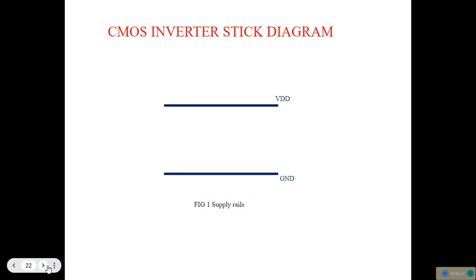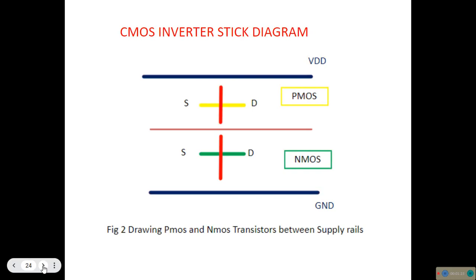The first and foremost step is we need to draw the basic supply rails and the ground. The metallic contact has to be drawn in blue colour line. First, we have to draw the supply rails, leaving some space between them to accommodate the remaining components of the layout. The next step is we have to draw the P-MOS Transistor and the N-MOS Transistor. Yellow colour line indicates P-diffusion, green colour line indicates N-diffusion, and red colour line indicates the polysilicon material.